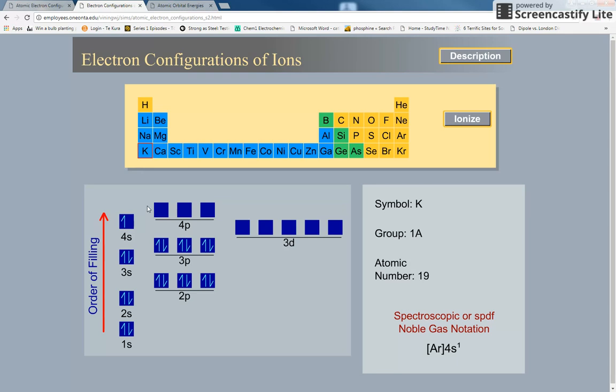So potassium, remember the 4s gets filled before the 3d because although the 4s is further out in terms of distance from the nucleus, it is actually lower in energy than the 3d. So it's the argon configuration plus 4s1. If I ionize it, it has lost that 4s electron. Same thing for calcium, it has two electrons in the 4s, none in the 3d. I ionize it and I form the calcium 2 plus ion.